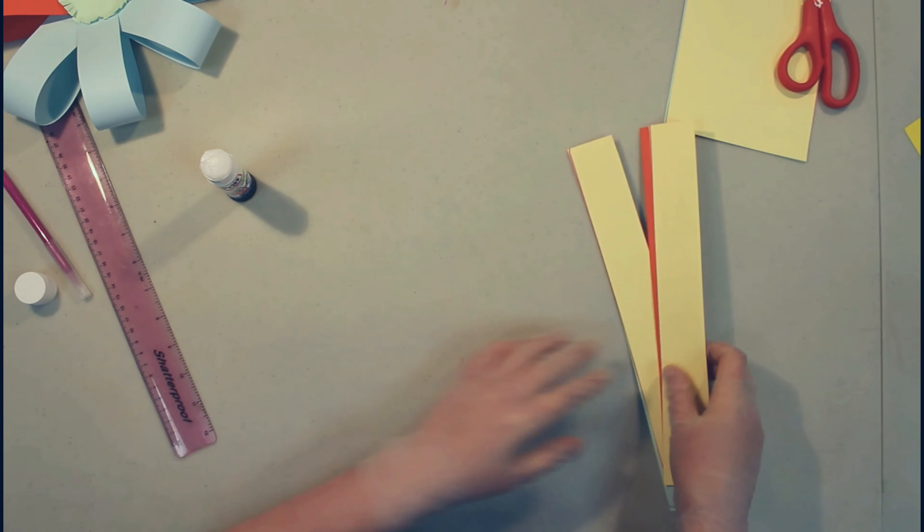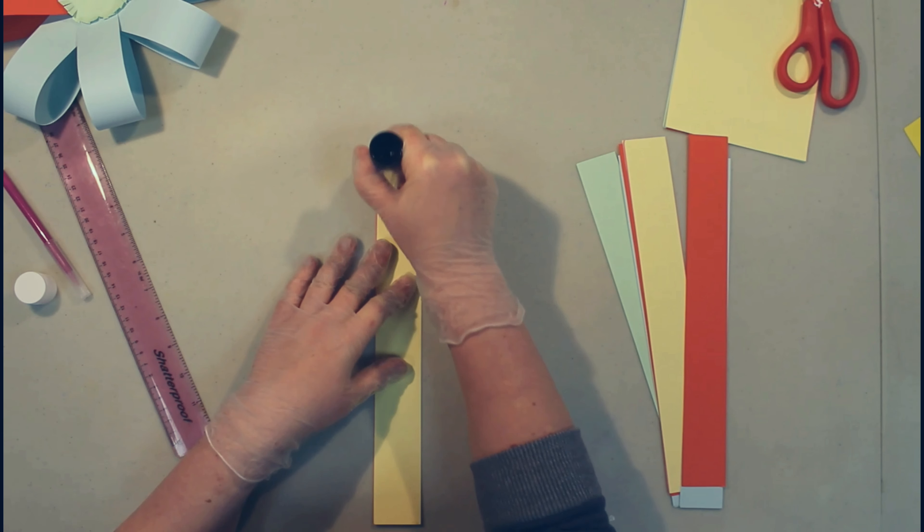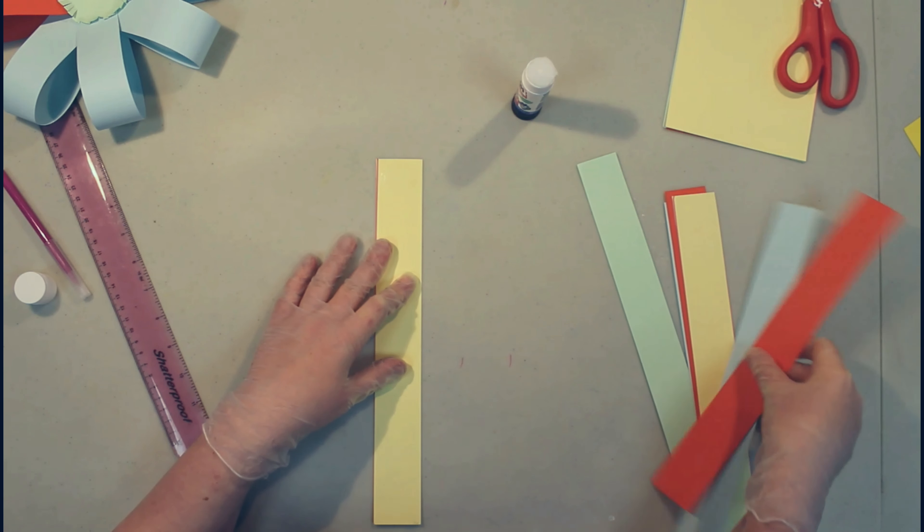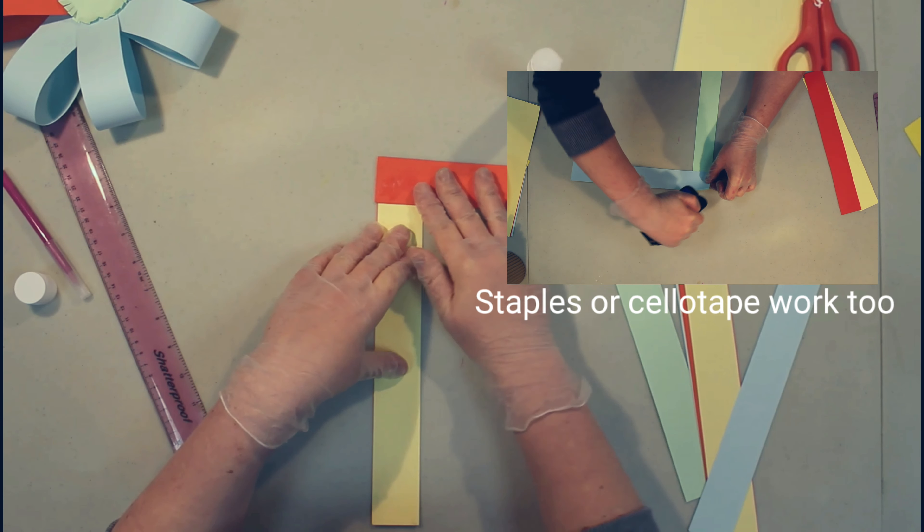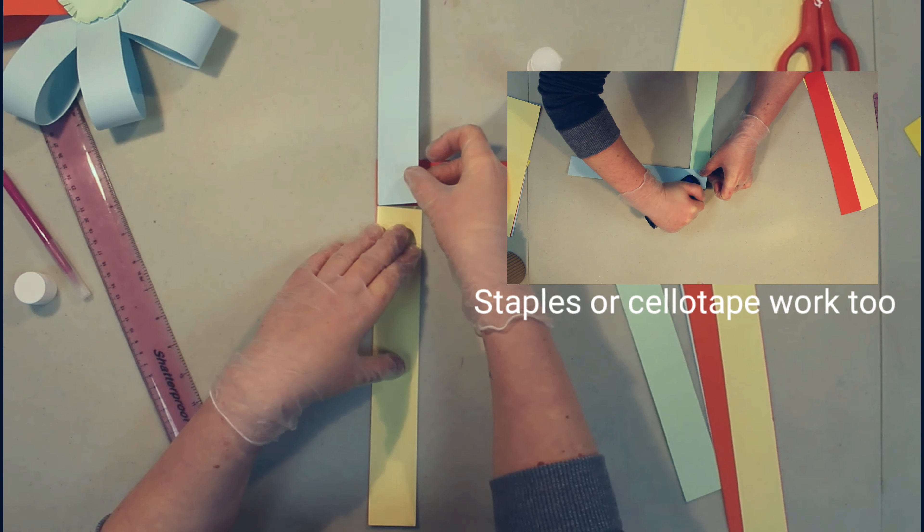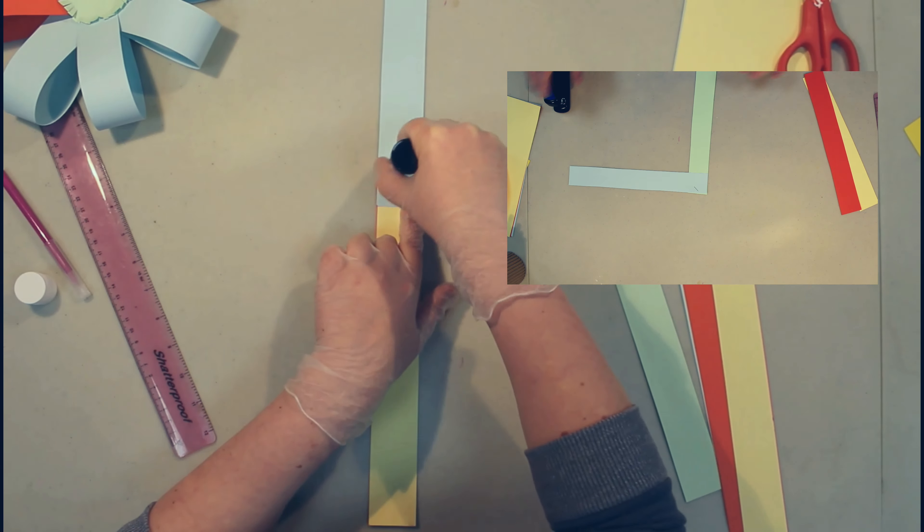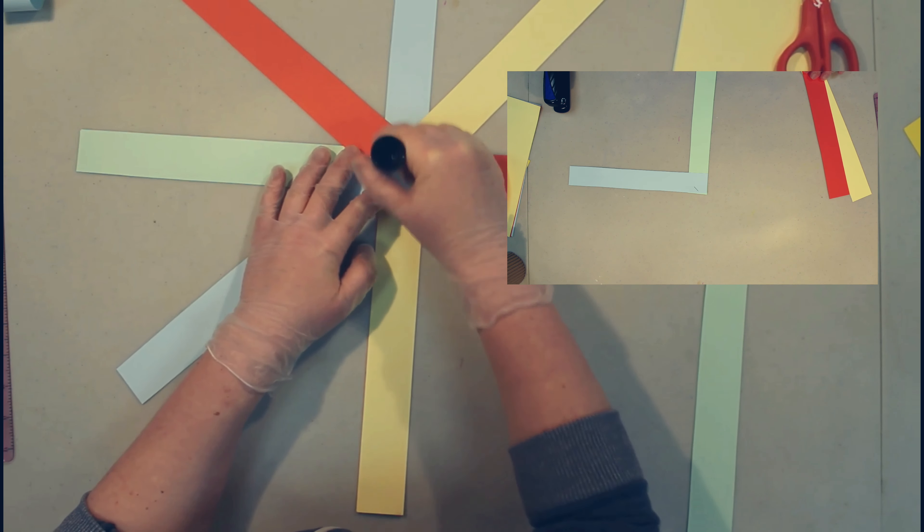And now it's time to start sticking the strips down. We're going to try and make a cross. So we're going to stick one here and one there and so on and eventually we're going to do the corners too.